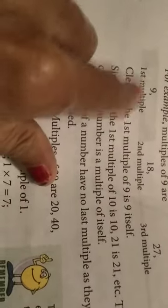For example, the multiples of 9 are: 1st multiple is 9, 2nd multiple is 18, 3rd multiple is 27, and 4th multiple is 36.